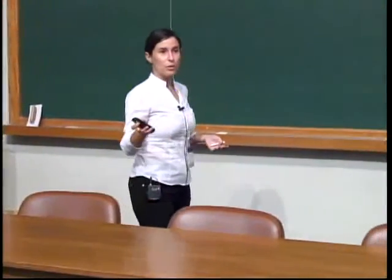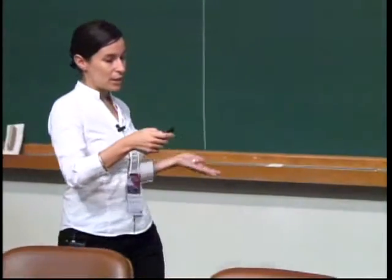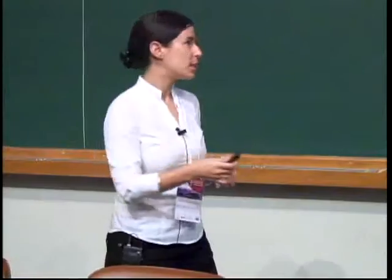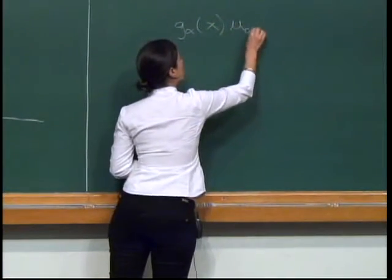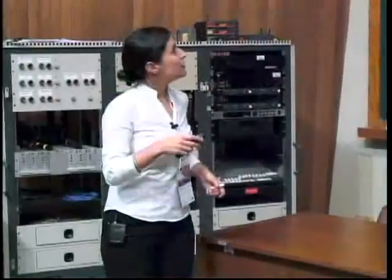In the literature of impulsive control systems, some things are already well known. First, we cannot give a notion of solution in the distributional sense — which is the first thing one might think to do, since we have a derivative of a non-absolutely-continuous function — but this is not correct since the system is nonlinear in u-dot. If it is not linear in u-dot, we cannot define the product, because x in this part will also not be regular enough to define the product in the sense of distributions. To multiply distributions, we need something regular on one side.